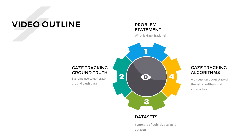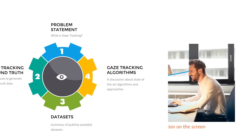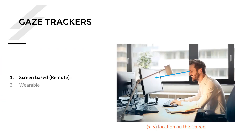The very first question is: what is gaze tracking? There are two different setups. The first is called screen-based gaze tracking or remote gaze tracking, where the objective is to find out where the person is looking on a screen. The objective is to find the X and Y location on the screen where the person's gaze is targeted.